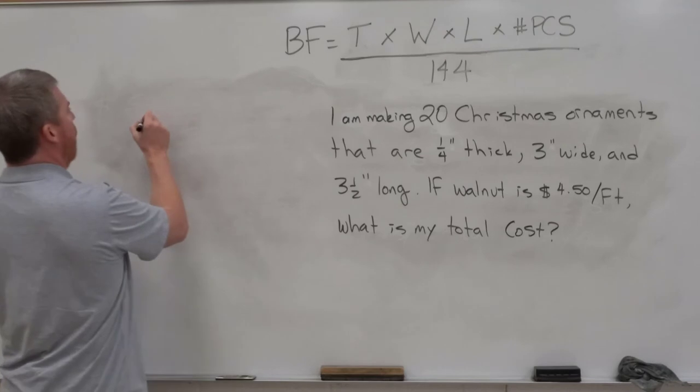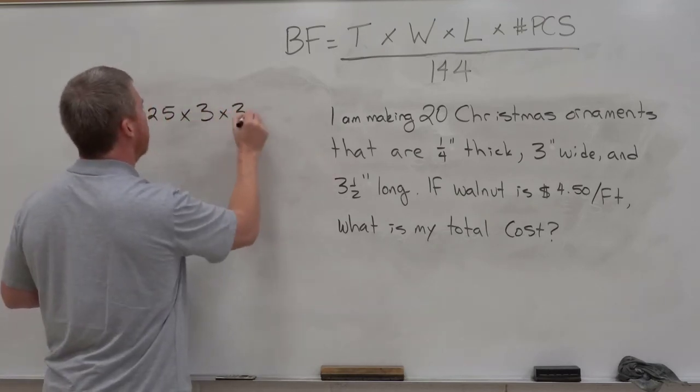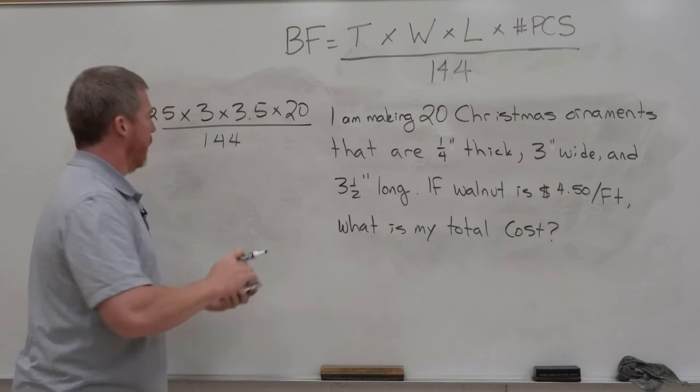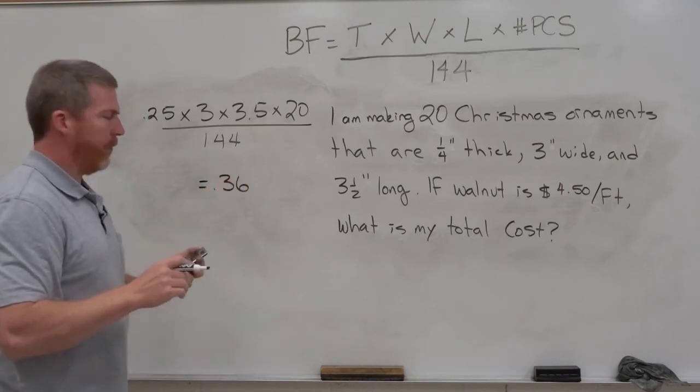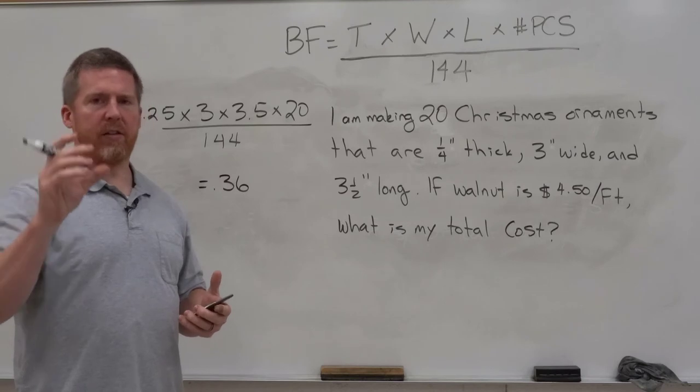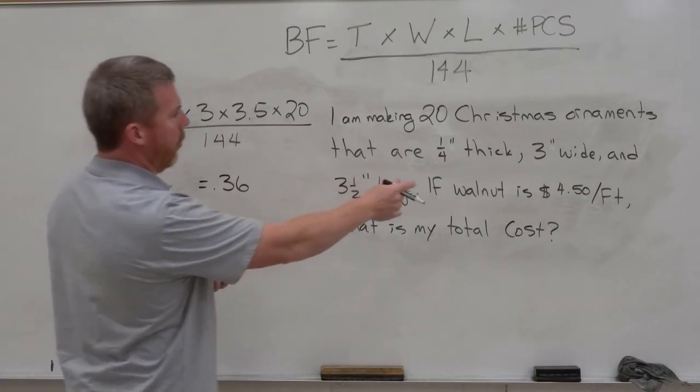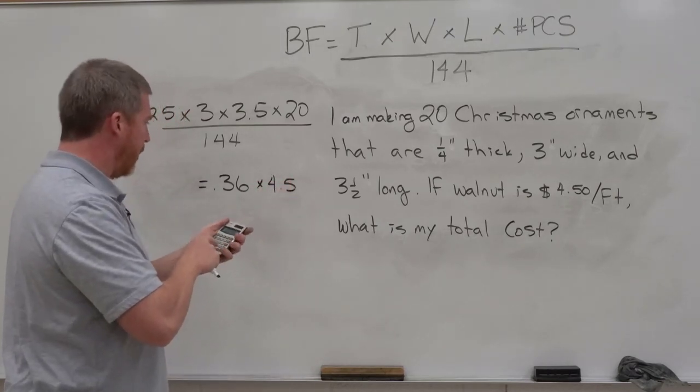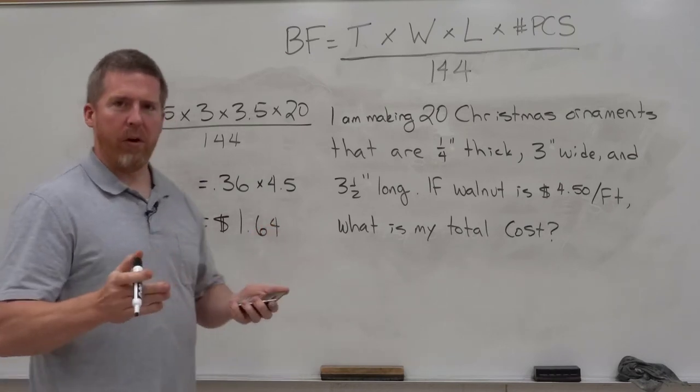So let's plug it in. Our four numbers. Thickness. We have one fourth. That's 0.25. Our width is three. Our length is three and a half. 3.5. Our number of pieces is 20. And divide all that by 144. Go through and get an answer on your calculator. And the answer I get is 0.36. And for whatever reason, some people just kind of freak out about that. It's like, that's too small. That's not even one board foot. Correct. Because everything is so thin and so small, 20 of them is barely a third of a foot. That's fine. The numbers are correct. So now we just do our normal, multiply that by 4.5 times $4.50 a foot. I still have it in my calculator times 4.5 gives me a total of $1.64 for the wood to make those ornaments.